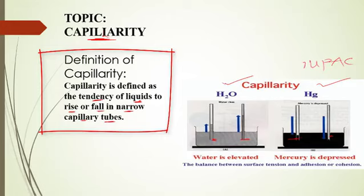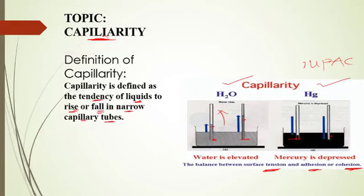In a capillary tube, water tends to elevate itself, water tends to rise. Look at its level here. But look at the mercury, mercury tends to be depressed. Each liquid put inside the capillary tube has its own tendency either to rise or fall in this narrow capillary tube. This is as a result of the balance between surface tension and forces of adhesion or cohesion.